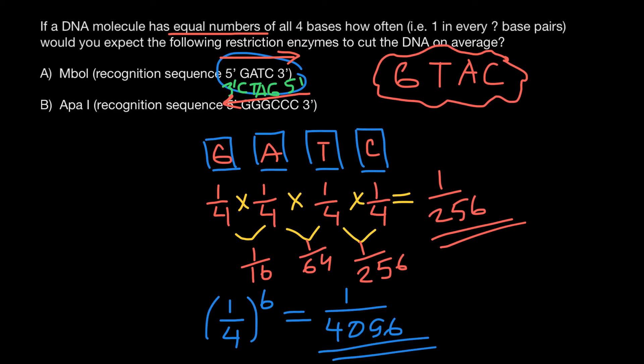Here's one more hint: what if our recognition site for a cutting enzyme were not a palindromic sequence, but for example were G-G-G-G?